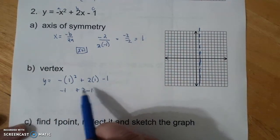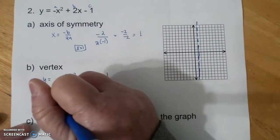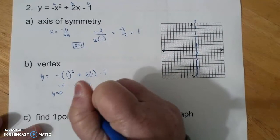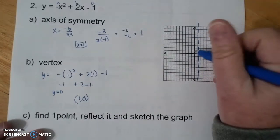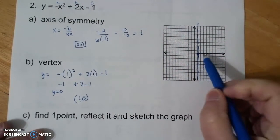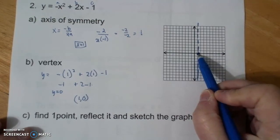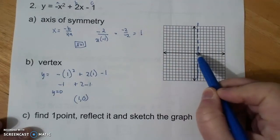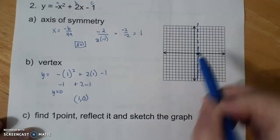So I have negative 1 plus 2 minus 1. Negative 1 and negative 1 is negative 2. That is 0. y equals 0. So at 1, 0. And so my axis of symmetry is actually my vertex. It's always going to be on my vertex.